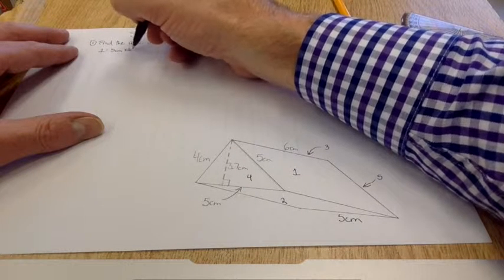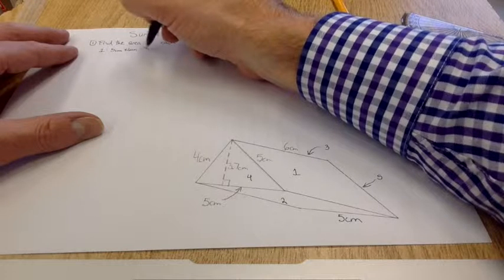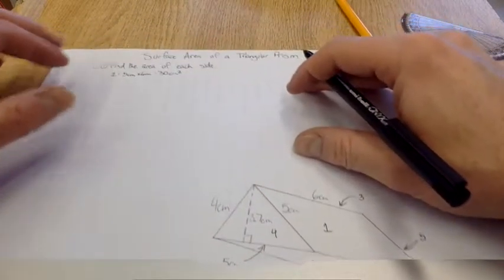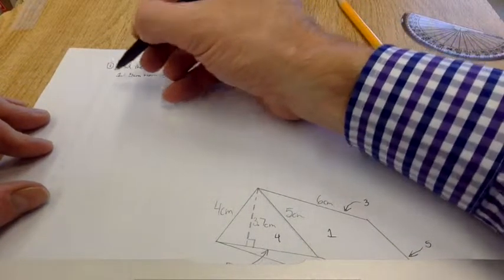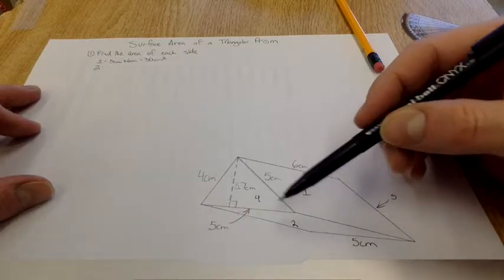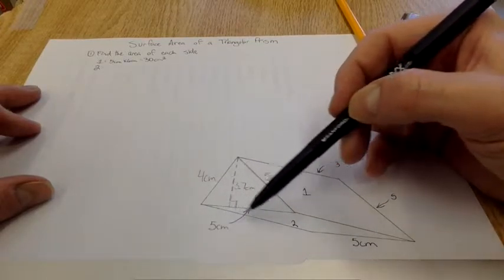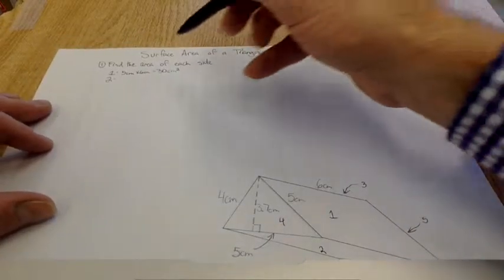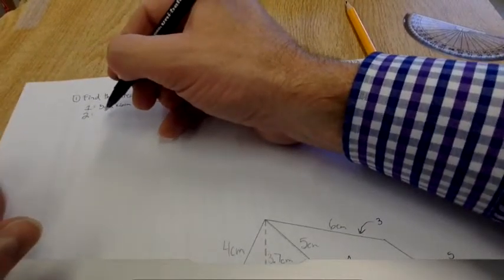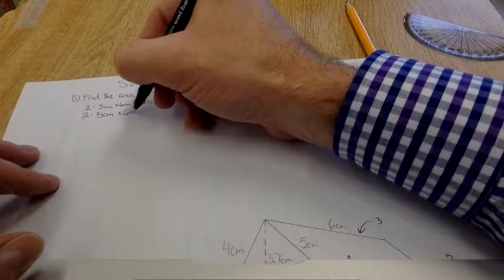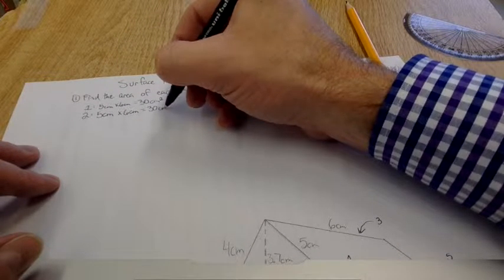So side one, 5 centimeters times 6 centimeters equals 30 centimeters squared. Please remember the unit, it is centimeters squared. Side two, right here, this is also 6 centimeters times 5 centimeters.